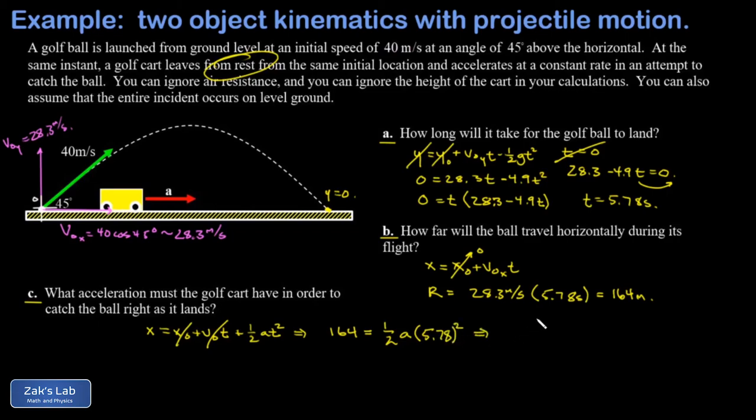So I just multiply by two on both sides, divide by 5.78 squared, and I get an acceleration for the golf cart of 9.82 meters per second squared, which is about as fast as a drag racing car would accelerate, so it's a very powerful golf cart.